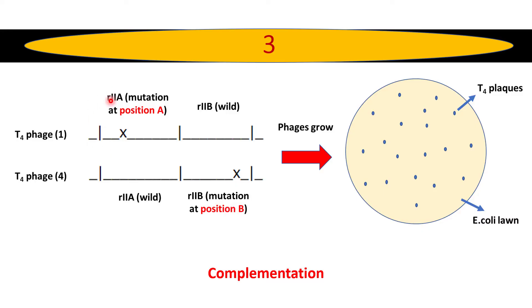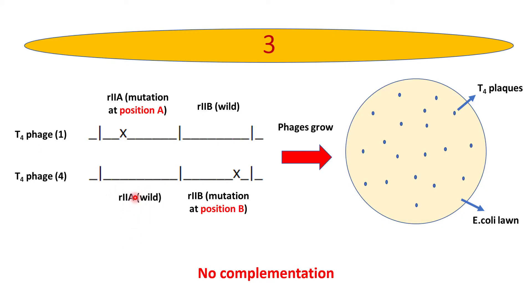Hence it is better to say that rIIa and rIIb are two separate genes present at the same rII locus. Together, these two types of phages could provide all the phage functions — they complement each other. The wild-type rIIa complements the mutant rIIa, and the wild-type rIIb complements the mutant rIIb.